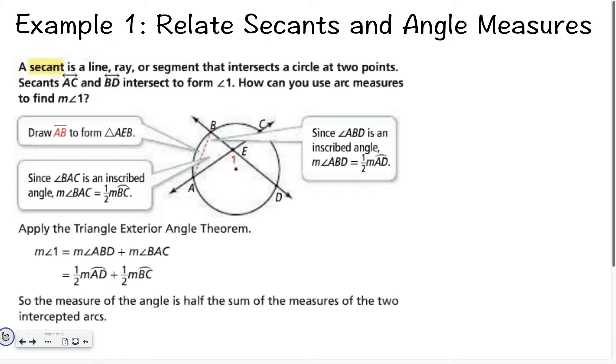I know this is a new word for you. A secant is a line, ray, or segment that intersects a circle at two points. It goes through the circle. In this picture, we have secant line AC and line BD. If you look at the picture, you can see that those two lines intersect at point E, and they form angle 1.